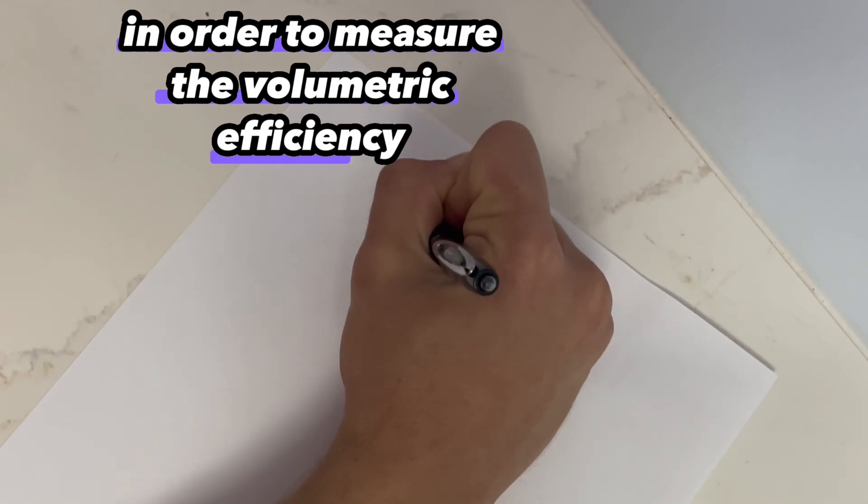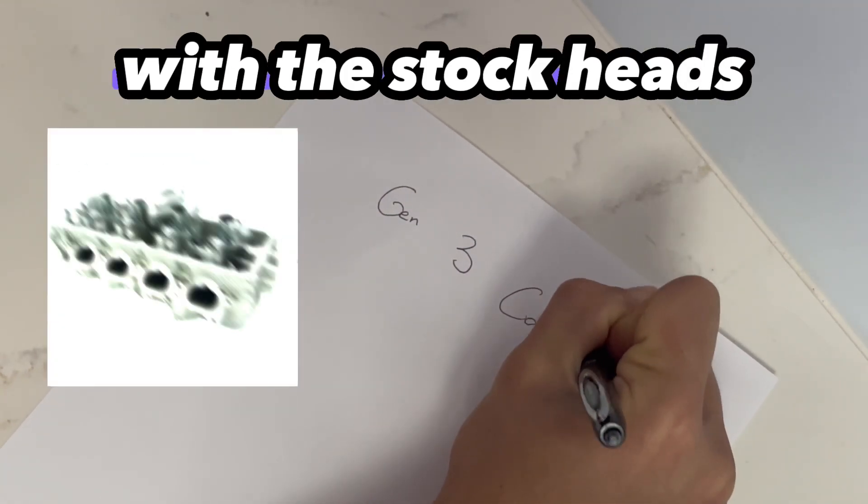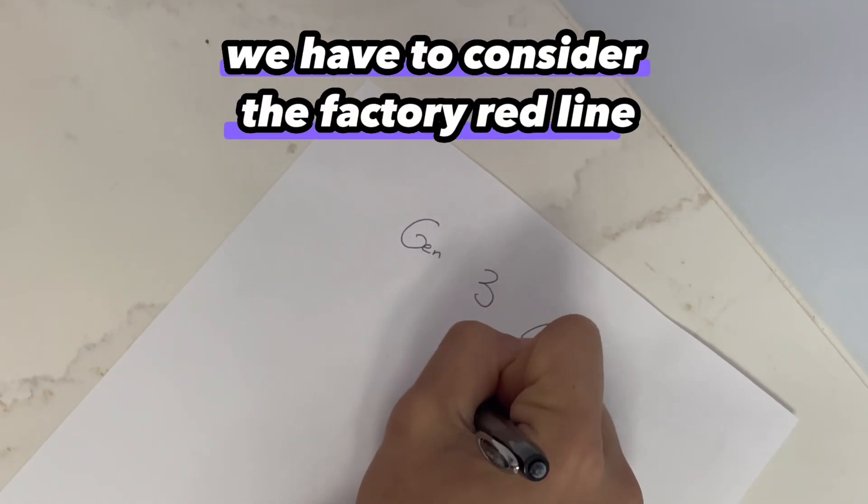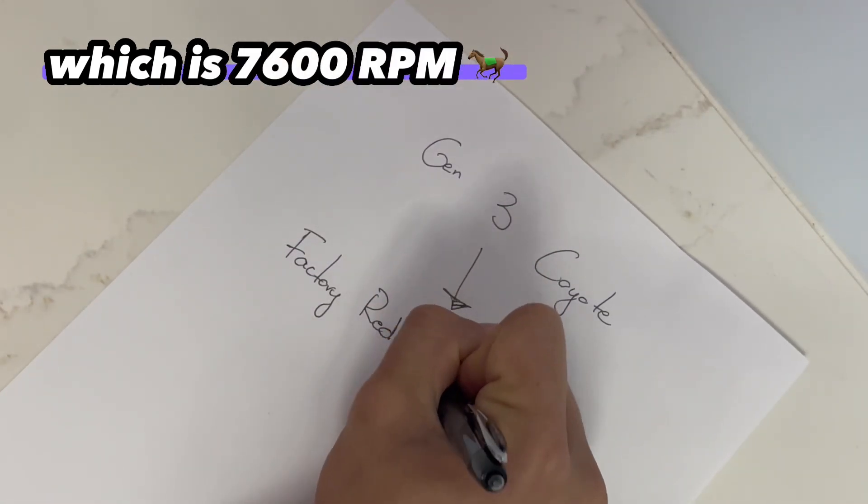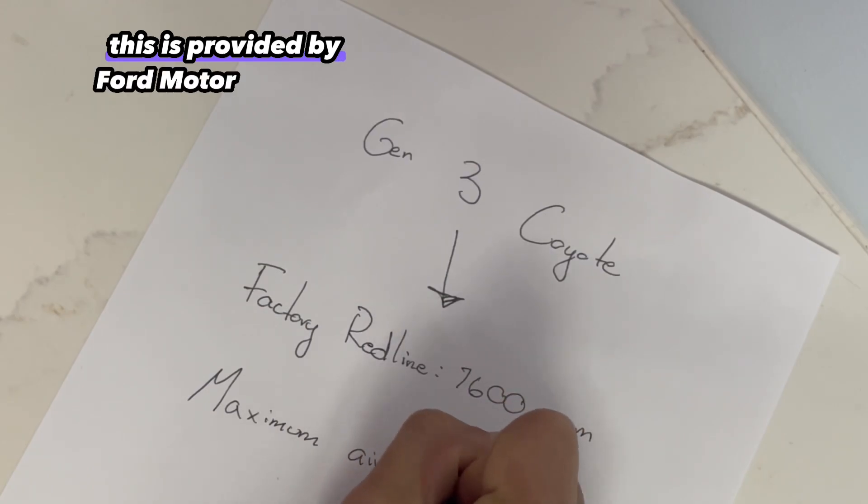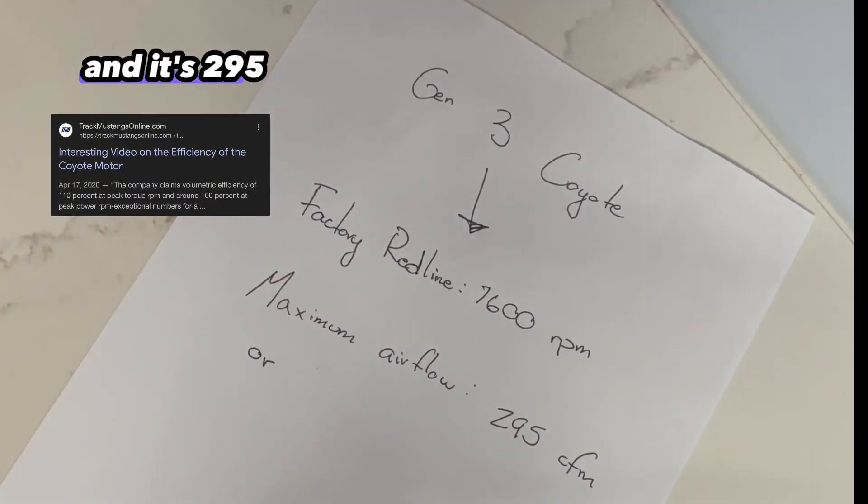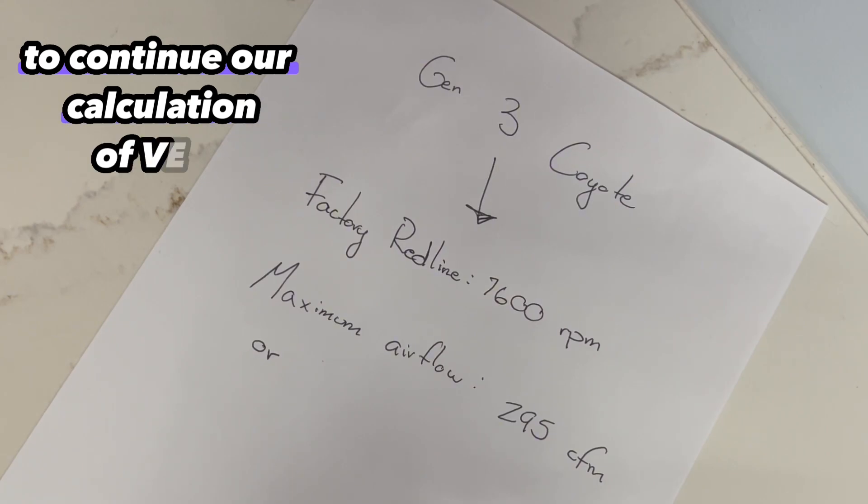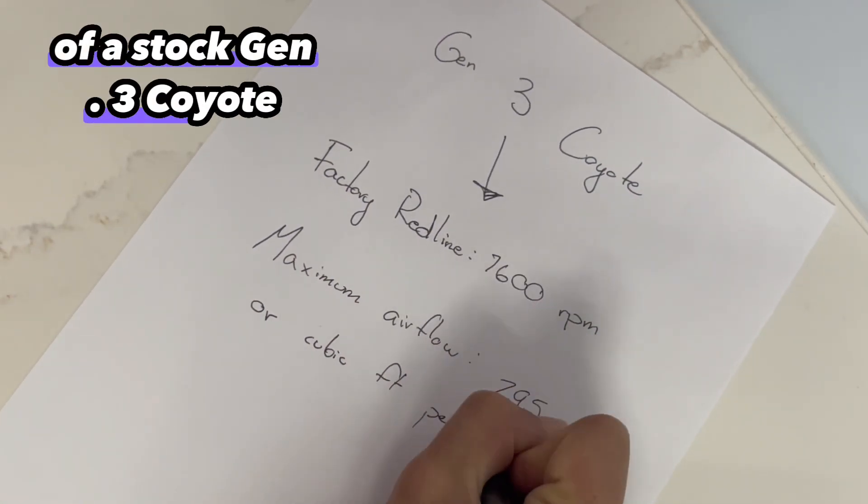So in order to measure the volumetric efficiency of a Gen 3 Coyote with the stock heads, we have to consider the factory redline, which is 7,600 RPM and the maximum airflow of the stock heads. So this is provided by Ford Motor Company and it's 295 cubic feet per minute.